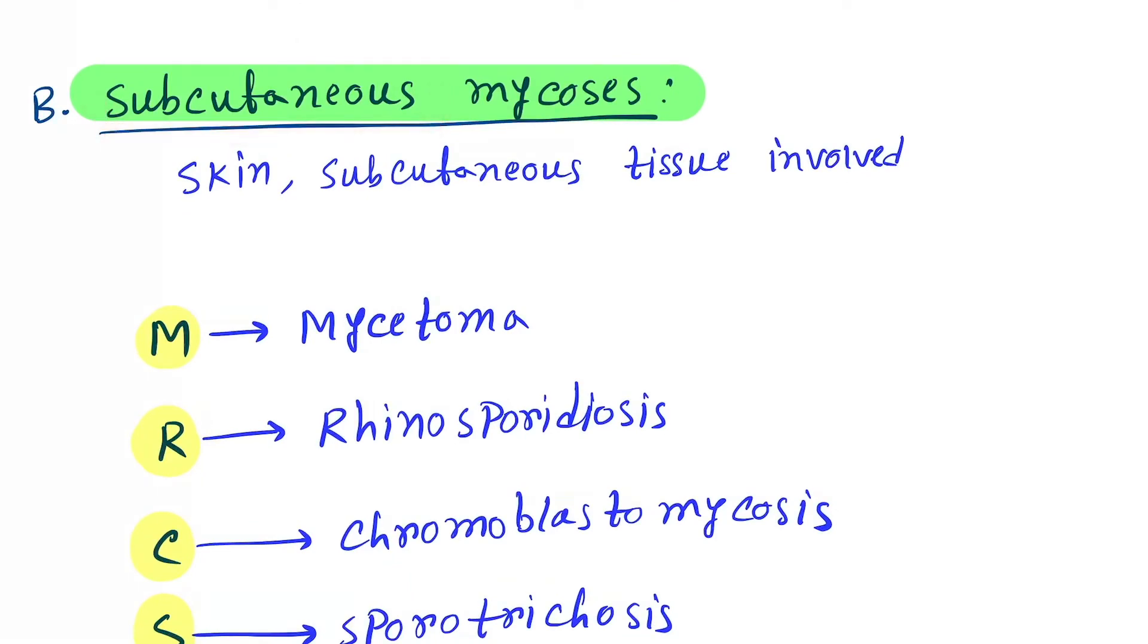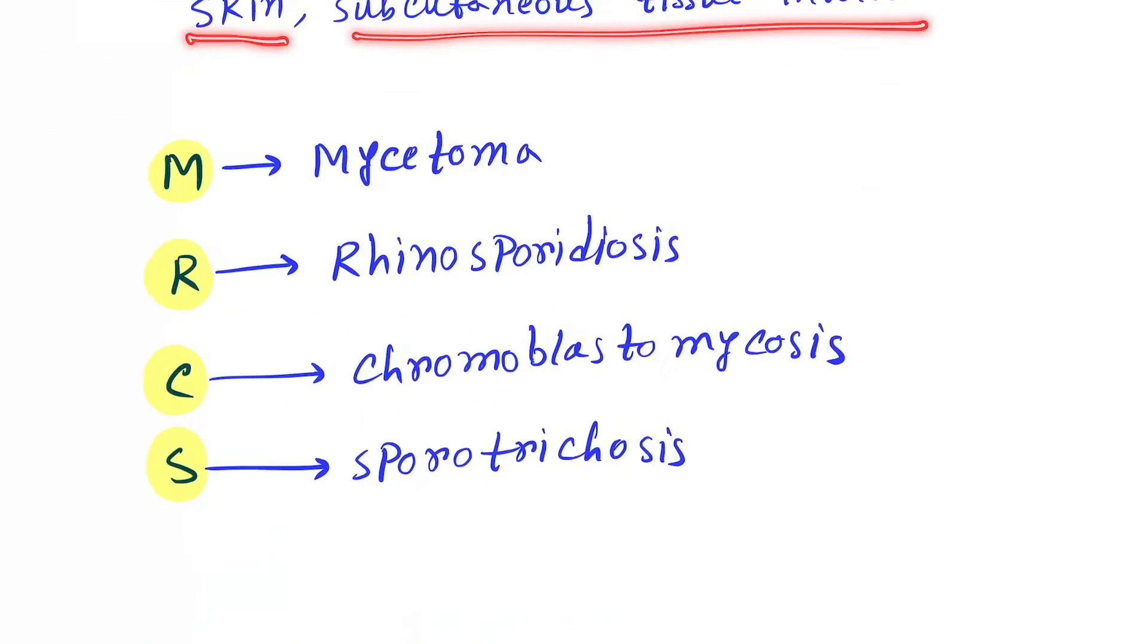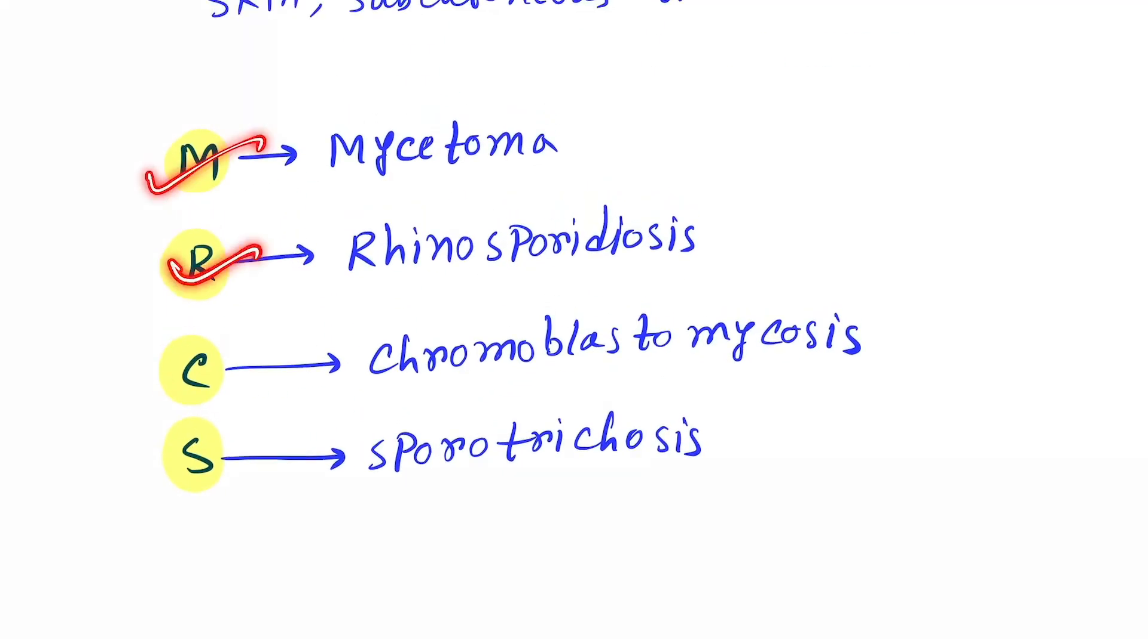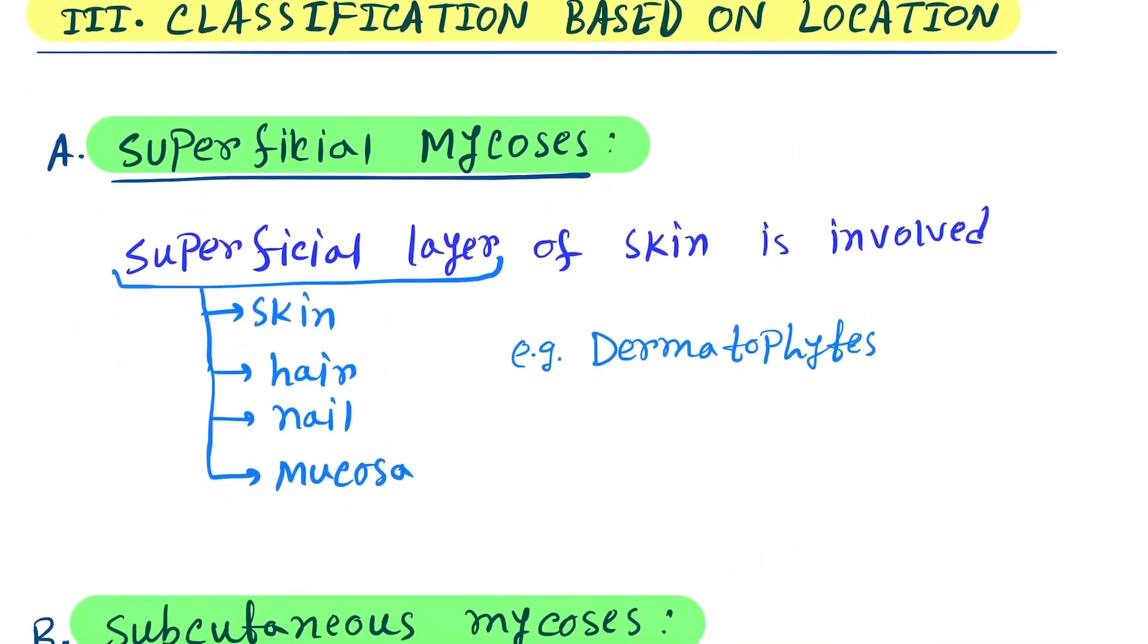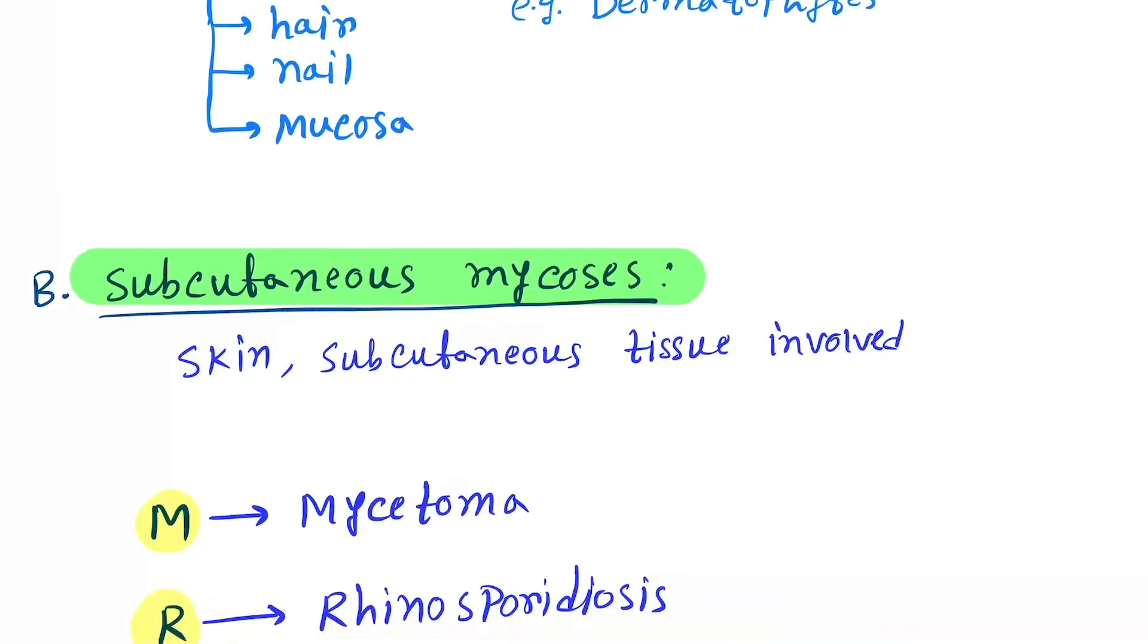Next is subcutaneous mycoses. Here subcutaneous tissue will be involved - skin and subcutaneous tissue are involved. Examples are MRCS: M for mycetoma, R for rhinosporidiosis, C for chromoblastomycosis, S for sporotrichosis.